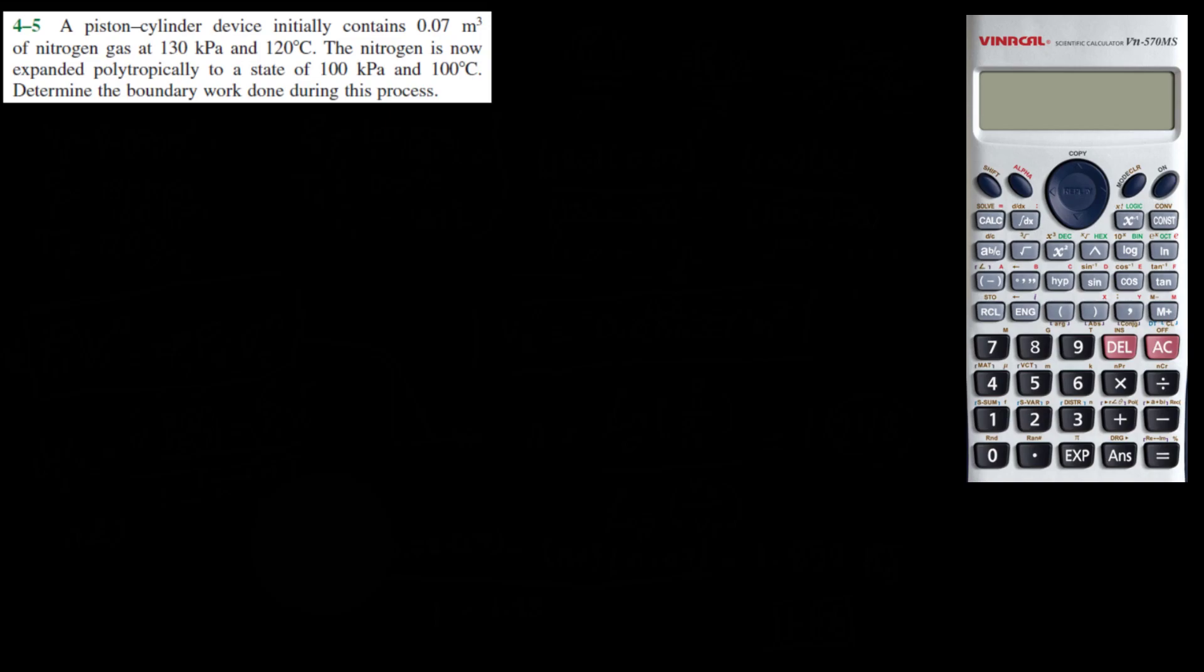A piston cylinder device initially contains 0.07 meter cubed of nitrogen gas at 130 kilopascals and 120 degrees Celsius. So I'm going to write this information down here. V1 is equal to 0.07 meter cubed. P1 is equal to 130 kilopascals. And T1 is equal to 120 degrees Celsius.